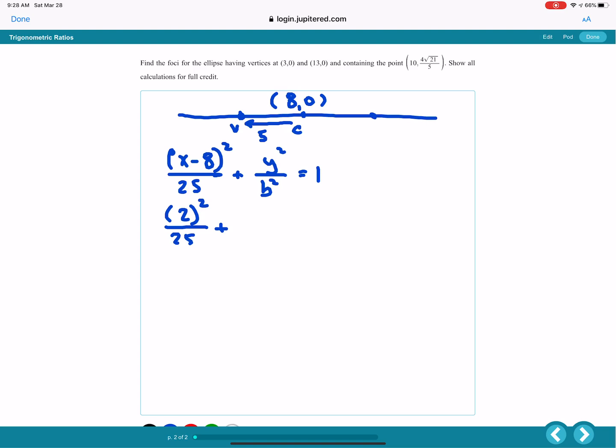when I square the 4 root 21 over 5, I end up with this. 16 times 21 over 25 b squared. Notice that the 25 goes into the denominator because that's the same as putting a 16 times 21 over 25 in the numerator. I'll let you think about that for just a second before I move on.